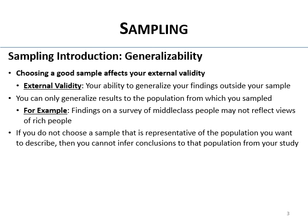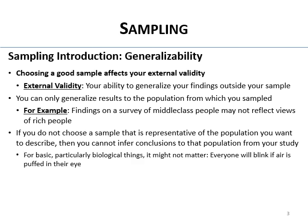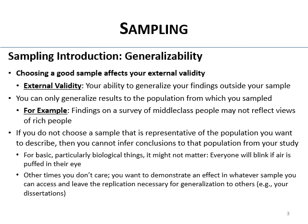If you don't choose a sample that's representative of the full population you want to describe or generalize to, you can't infer conclusions to that population based on your study. For basic biological things it might not matter — if you blow air at someone's eye they'll blink. But other times you just want to demonstrate an effect using whatever sample you can get, and leave replication to others in the future.